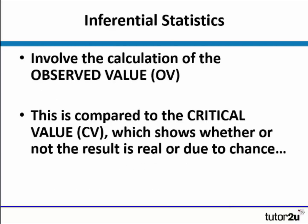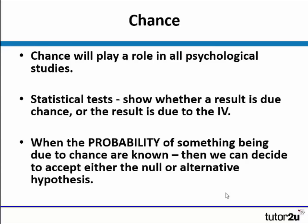In inferential statistics, we calculate the observed value. We go through all the different stages of the test and then compare our observed value, or calculated value, to the critical value, which we find in the critical values table. This comparison allows us to decide whether the result is real or is due to chance. Chance plays a role in all psychological studies, and the role of inferential statistics is to discuss whether the result is due to chance or, more likely, due to a change in the IV.